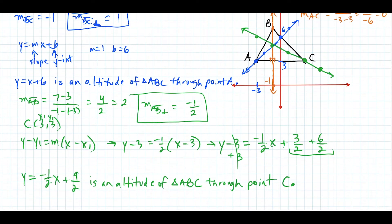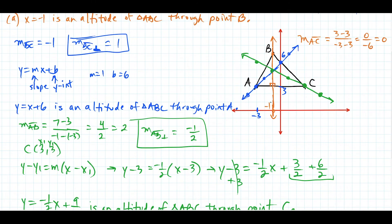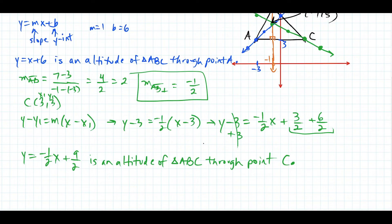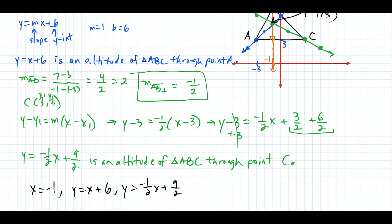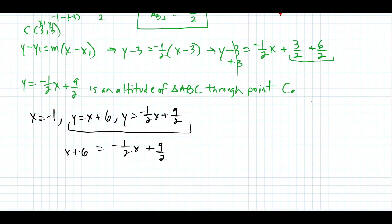The last thing we need is to find the coordinates of the orthocenter, which is the intersection of the three altitudes. We could just use the graph and notice it's intersecting at negative 1, 5. So the orthocenter appears to be at negative 1, 5. But if we want to be formal, we use the three equations: x equals negative 1, y equals x plus 6, and y equals negative 1 half x plus 9 halves — and treat this as a system of equations. We'll set x plus 6 equal to negative 1 half x plus 9 halves to verify negative 1, 5 is the orthocenter.